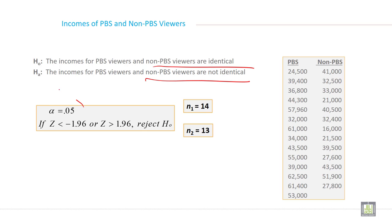So alpha, the type one error rate is 0.05, and the decision rule will be if z is less than minus 1.96 or z is greater than 1.96, reject null hypothesis.